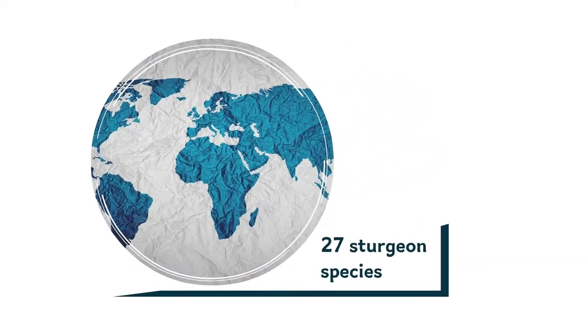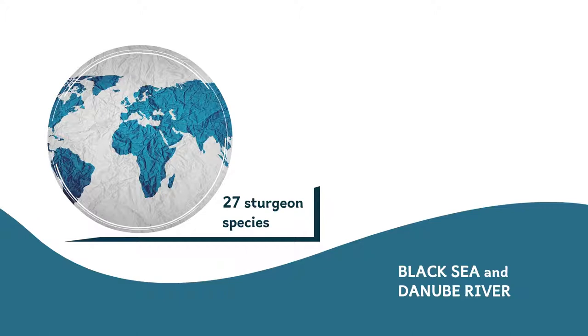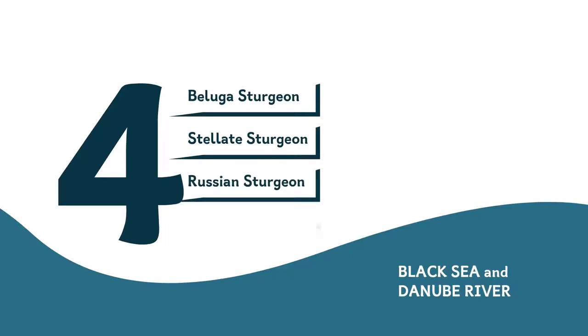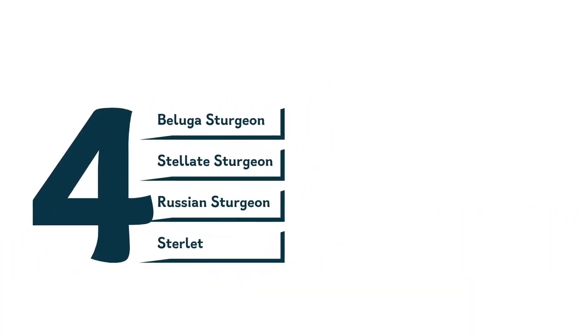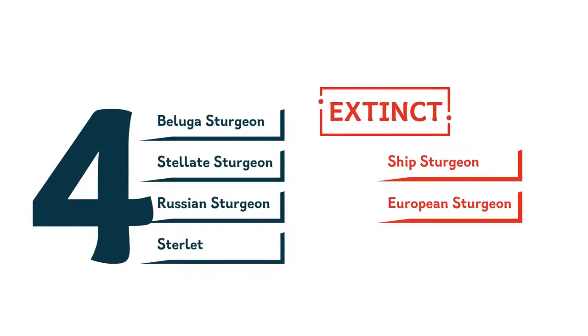There are 27 sturgeon species in the world, four of which can be found in the Black Sea and the Danube River: Beluga, stellate sturgeon, Russian sturgeon, and sterlet. There used to be ship sturgeon and European sturgeon too, but these species are now considered extinct in the region.